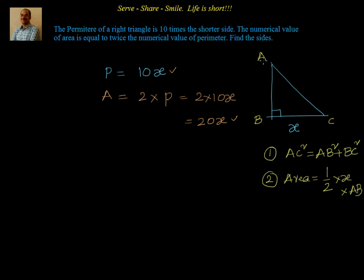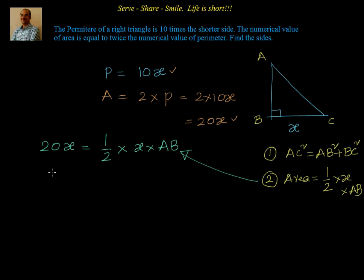We will now find AB. Area equals 20x, and area also equals half into base into height — base is x and height is AB. So 20x equals half into x into AB. The x's cancel, giving AB equal to 40 units. Whatever the units may be — centimeters, meters, or feet — we know AB equals 40.